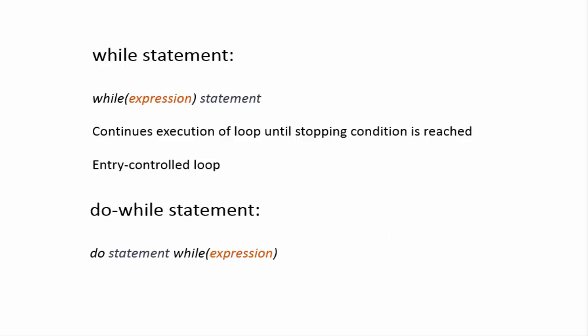The do-while statement will also contain some feature that alters the expression to become false, providing the terminating condition. The statement used here is not usually a simple statement — it can also be a compound statement. We call the do-while statement an exit control loop because it checks the condition after exiting the loop body, whereas the while statement checks the condition before entering the loop body, which is why it is called the entry control loop.